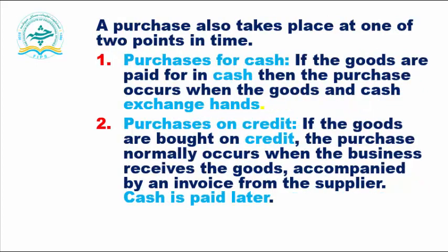A purchase also takes place at one of two points in time: purchase for cash and purchase on credit. If the goods are paid for in cash, then the purchase occurs when the goods and cash exchange hands. If goods are bought on credit, the purchase normally occurs when the business receives the goods accompanied by an invoice from the supplier, and cash is paid later.